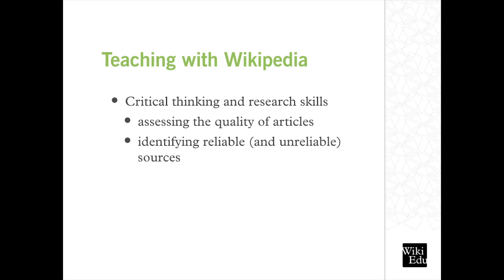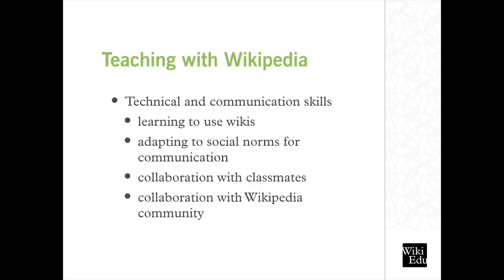Students have to exercise critical thinking and research skills in assessing the quality and coverage of existing Wikipedia content and looking for topic gaps. They're challenged to evaluate the quality of sources, to identify reliable as well as unreliable sources, and to cite and summarize them effectively. Wikipedia is also a really interesting and unique medium. Students working on Wikipedia learn how to use a wiki, an increasingly popular kind of software that Wikipedia is built upon. More significantly, they're given an opportunity to engage in a really valuable kind of collaboration quite unlike typical group work.